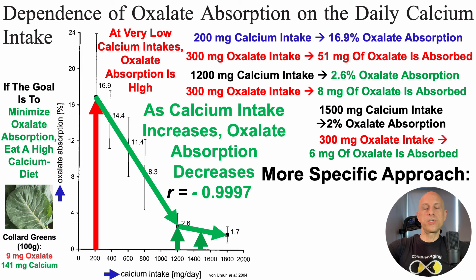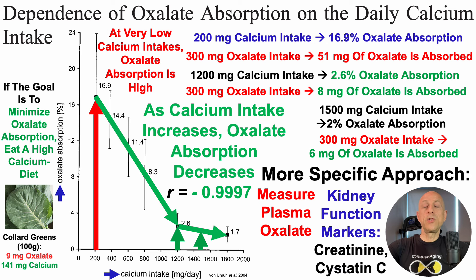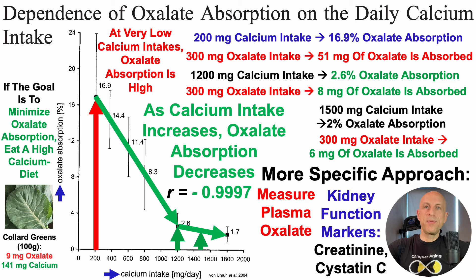For those who want a more specific approach, one way is to measure plasma levels of oxalate to assess whether dietary intake may be too high — keeping in mind that plasma oxalate is an integrated measure of kidney function, liver production, and gut bacterial degradation. But there may be a more specific measure: looking at kidney function markers, including creatinine and potentially cystatin C. If those markers look good, then one's oxalate intake may be okay and not potentially damaging to the kidney.